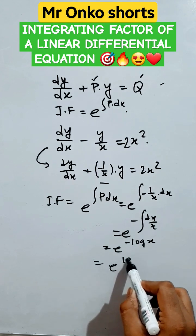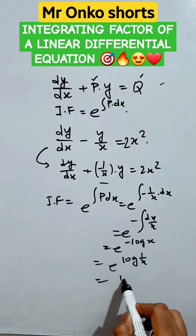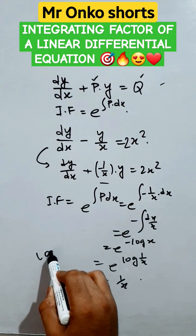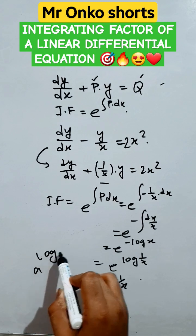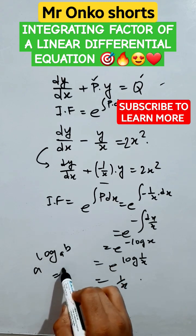So it is e to the power log 1 by x. The answer is 1 by x, since logarithm of a raised to the power logarithm of b to the base a equals b.